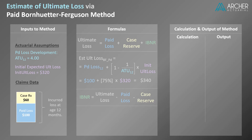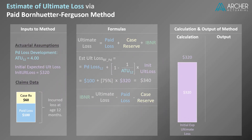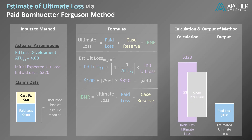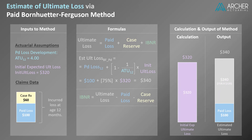Let's look at this graphically. We'll start by graphing our initial expected ultimate loss of $320. Using the formula, we know that the estimated ultimate loss equals paid loss plus 75% of the initial expected ultimate loss, or $240. Note that the $240 represents the loss reserves for the paid BF method. We know that case reserves equals $60. Using our formula for IBNR, we calculate a value for IBNR of $180.